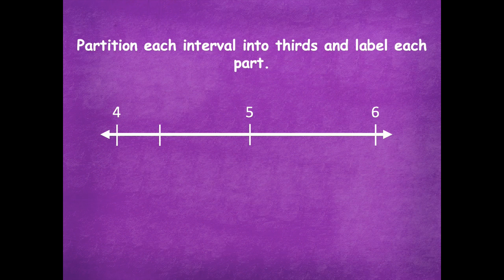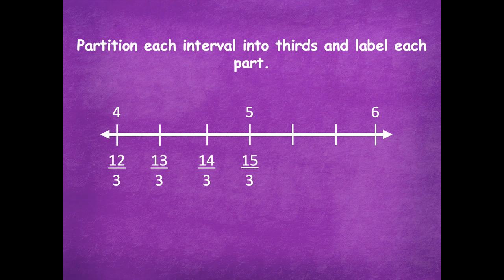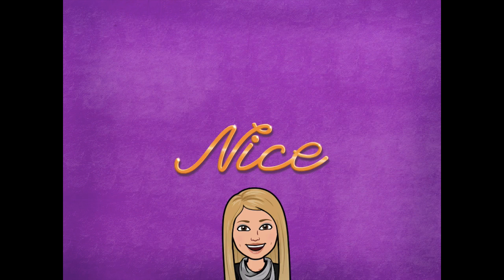I'm going to start with splitting into thirds between four and five, and now between five and six splitting into thirds again. It might be helpful to cover up the parts you're not working on — use another piece of paper to cover between five and six so you don't get confused about which part to split into thirds. Now I'll label my fractions: twelve thirds is the same as four — you can check that by saying twelve divided by three equals four. Keep counting on: thirteen thirds, fourteen thirds, fifteen thirds. Check: fifteen divided by three equals five — so you're right on track. Keep going: sixteen thirds, seventeen thirds, and eighteen thirds.